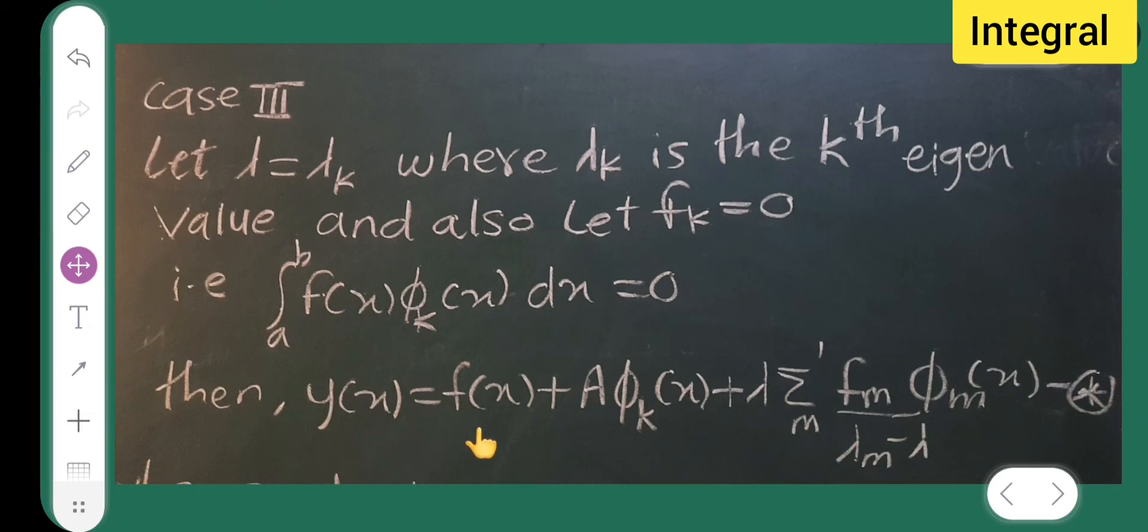Then y of x is equal to f of x plus a phi k of x plus lambda summation of m. This is summation dash, fm upon lambda m minus lambda, phi m of x. Consider this as star. And this dash implies that we should neglect m equals k in the summation and a is the arbitrary constant.